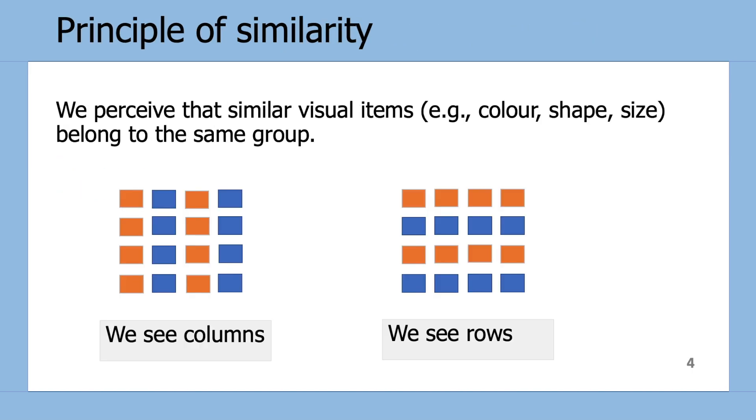Starting off with the Principle of Similarity, humans perceive that visual items that are the same color, shape, size, and so on, belong to the same group. So this example here demonstrates Principle of Similarity using color, where on the left-hand side we can see columns, but on the right-hand side we can see rows.